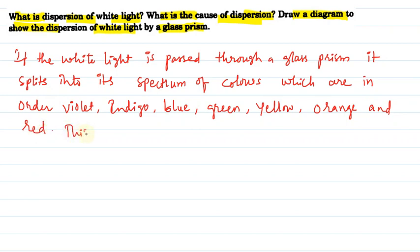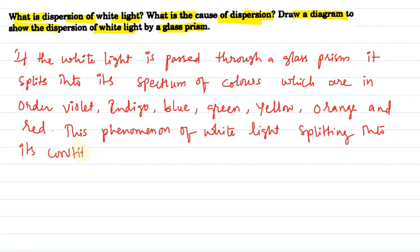This phenomenon of white light splitting into its constituent colors is called dispersion.